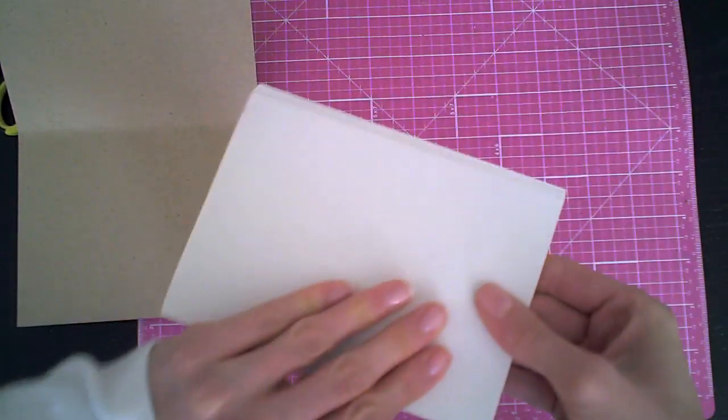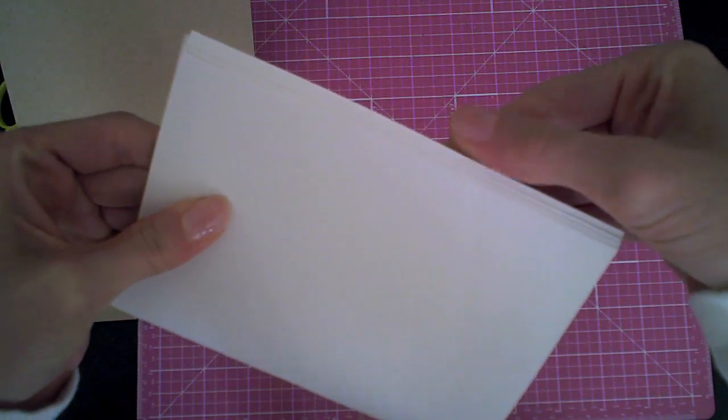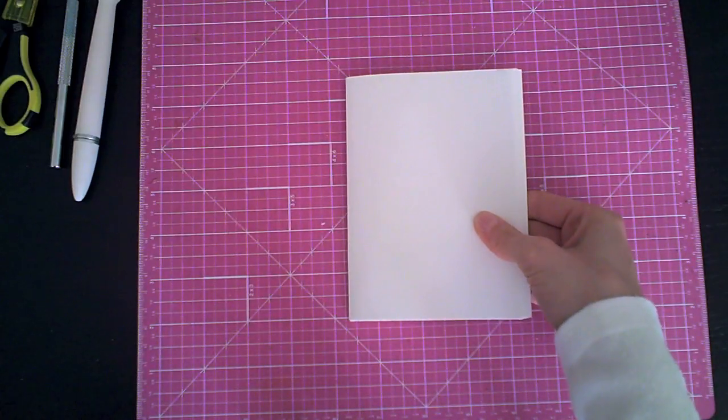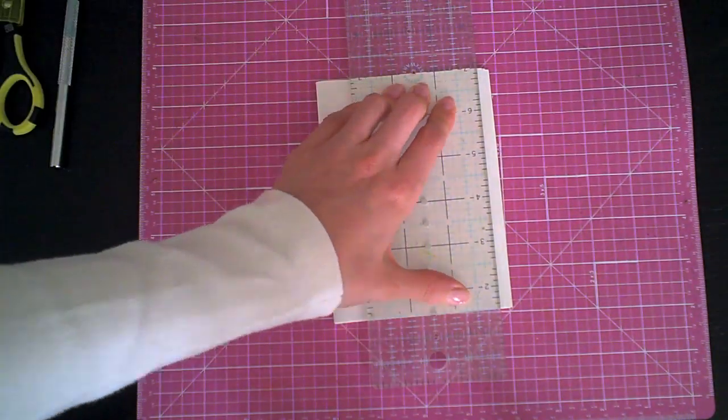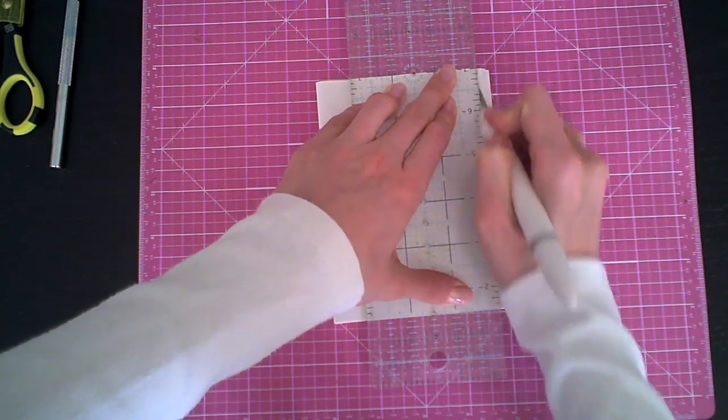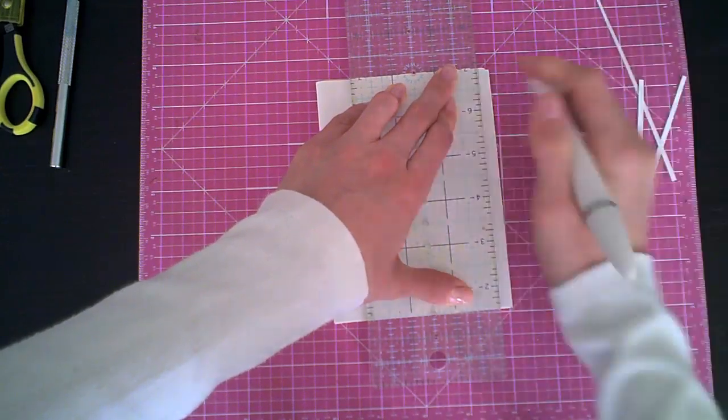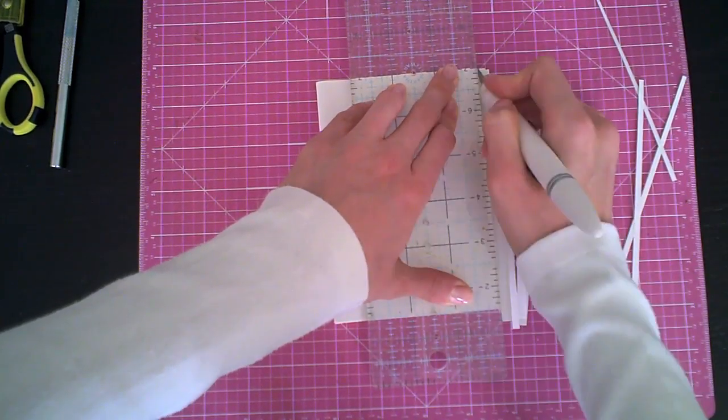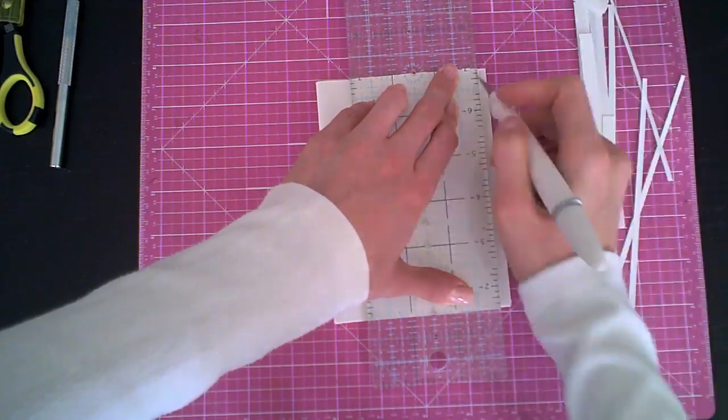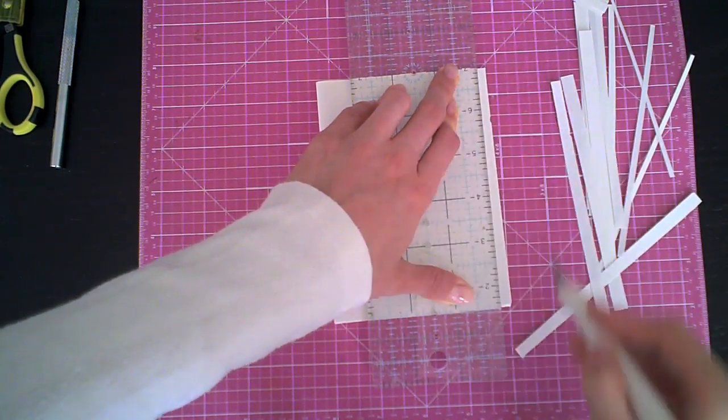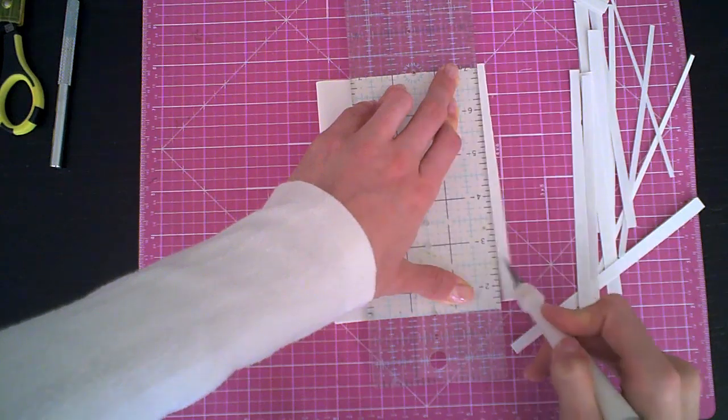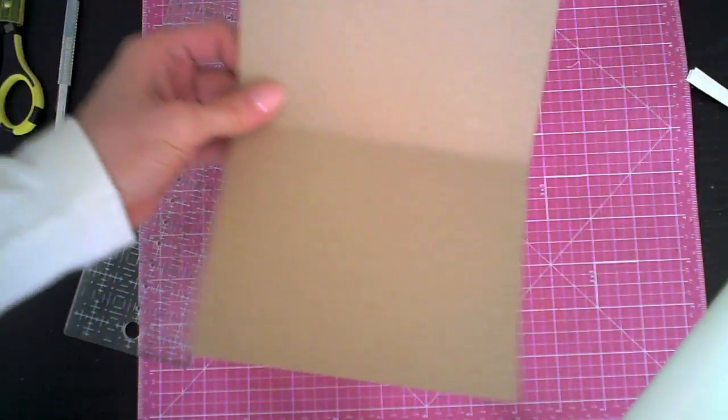So I fold it in half and here you can see that it's kind of messy at the ends. So I just trim off the excess with a grid ruler that I align with the edges of the white paper. And with the craft knife I just cut all the edges and straighten the edge.